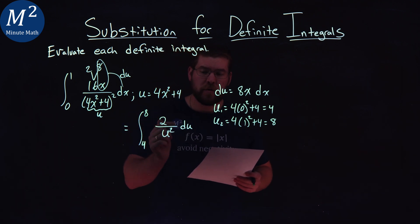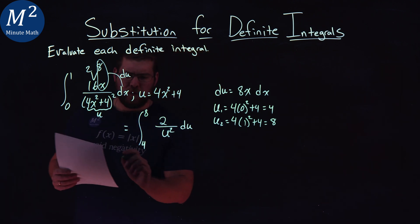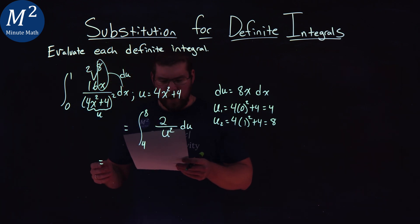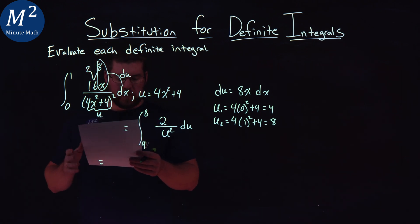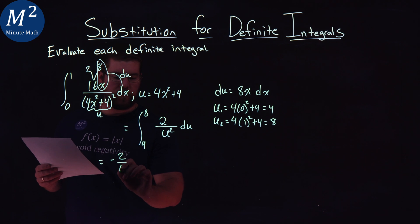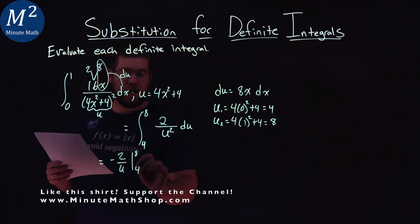So let's solve it. What is that integral? Well, 2 over u squared integrates to be negative 2 over u, and we're integrating this between 4 and 8.